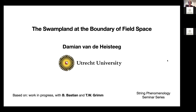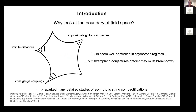I'll be telling you today about some swampland-motivated studies we're doing at the moment of field spaces in string compactifications. So first things first, why would we be interested in the boundary of these field spaces? Well, from an effective field theory perspective, we kind of expect a well-controlled description of these theories. For instance, gauge couplings come small, so we expect some kind of weakly coupled description.